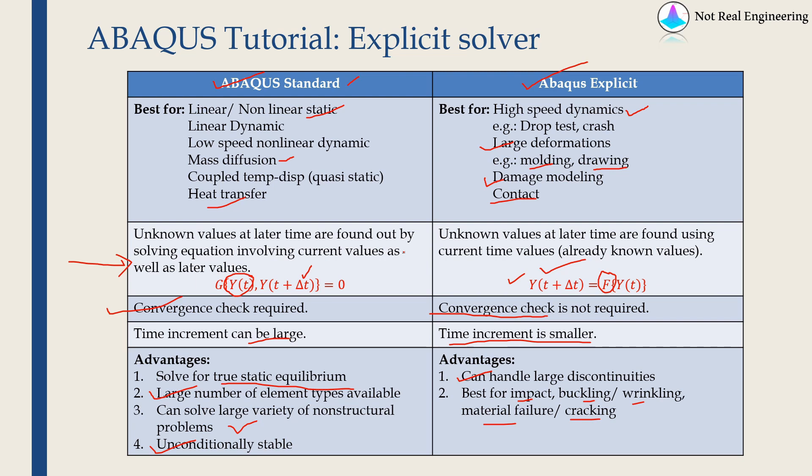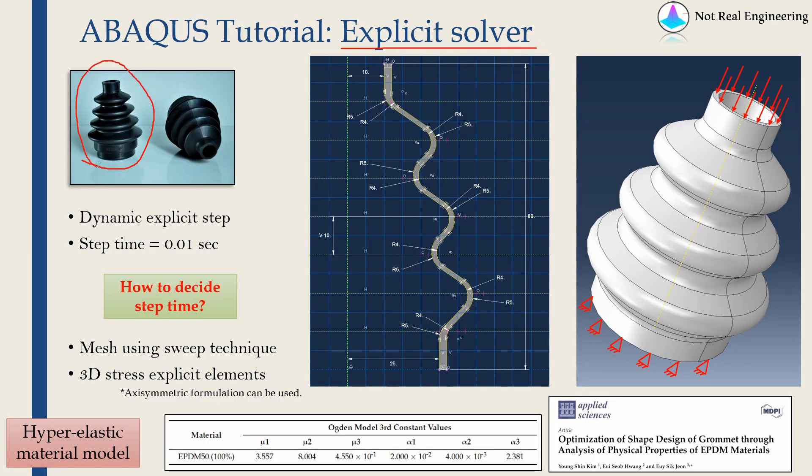Now let's go into today's problem. Today we are going to model this geometry. This is made from rubber or a polymer, so it is very soft and it can undergo large deformations. That's why we are using Abaqus explicit.